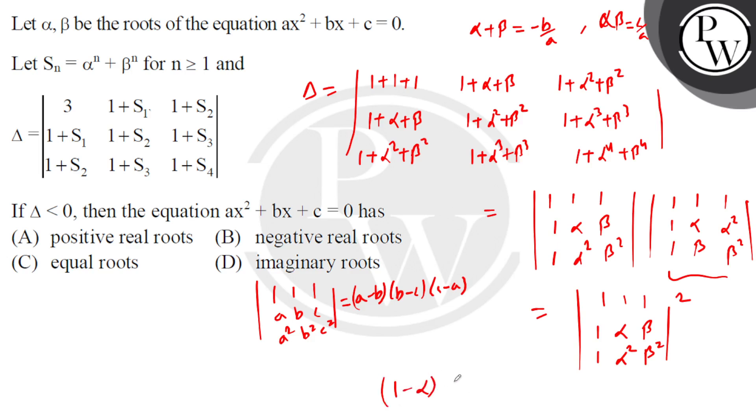So we have (1-α)(α-β)(β-1), and this entire expression is squared. So it will be squared, squared, and squared.